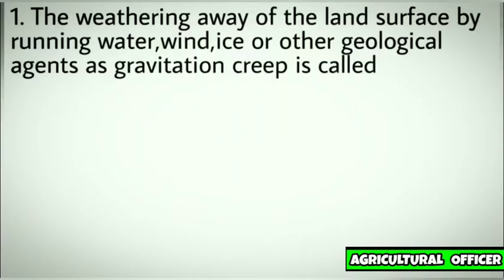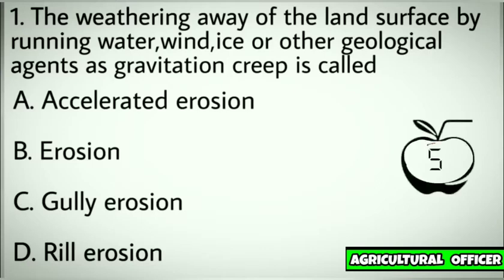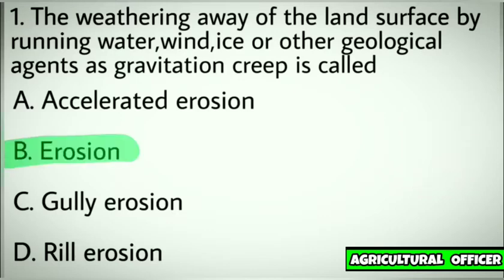Question number one. The weathering away of the land surface by running water, wind, ice or other geological agents such as gravitation creep is called. Options: A. Accelerated erosion. B. Erosion. C. Gully erosion. D. Rill erosion. Correct answer: B. Erosion.